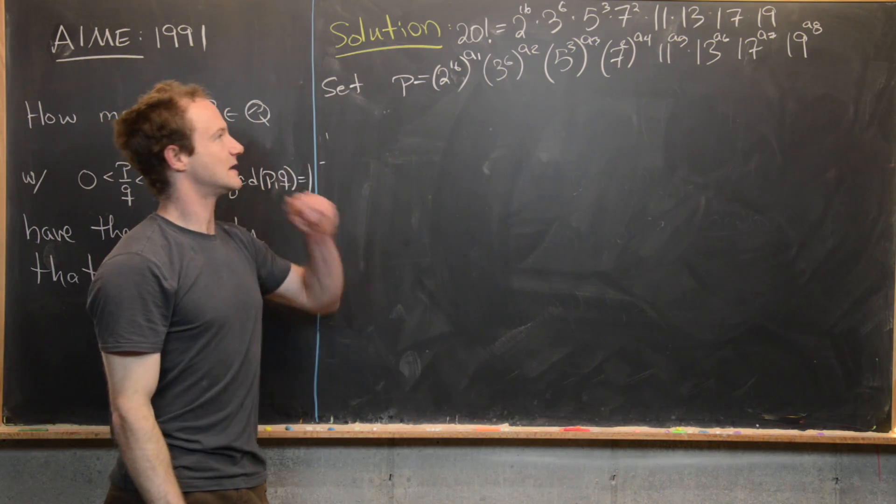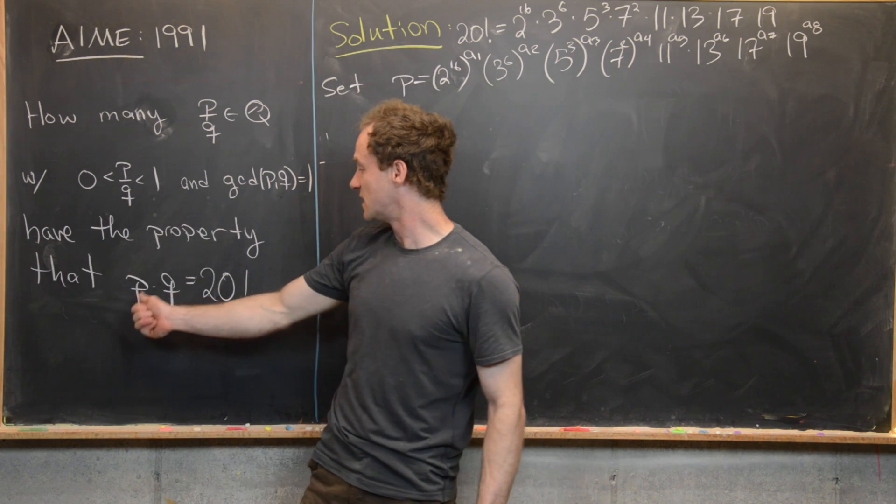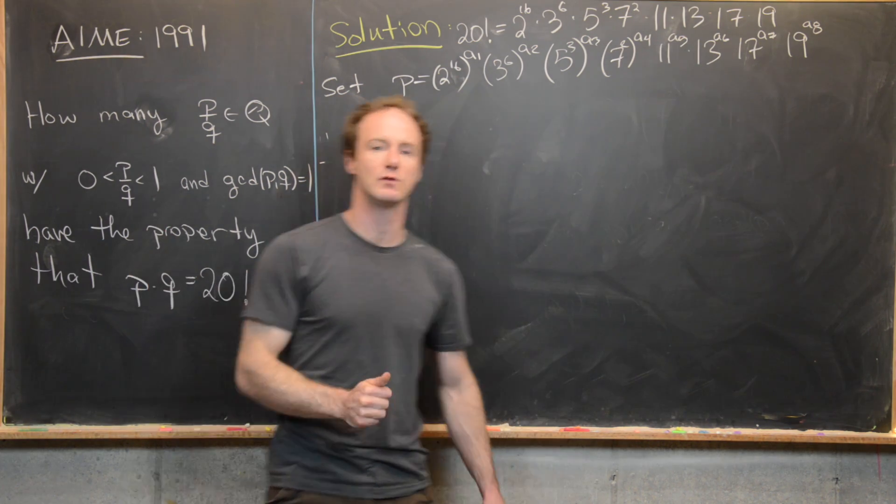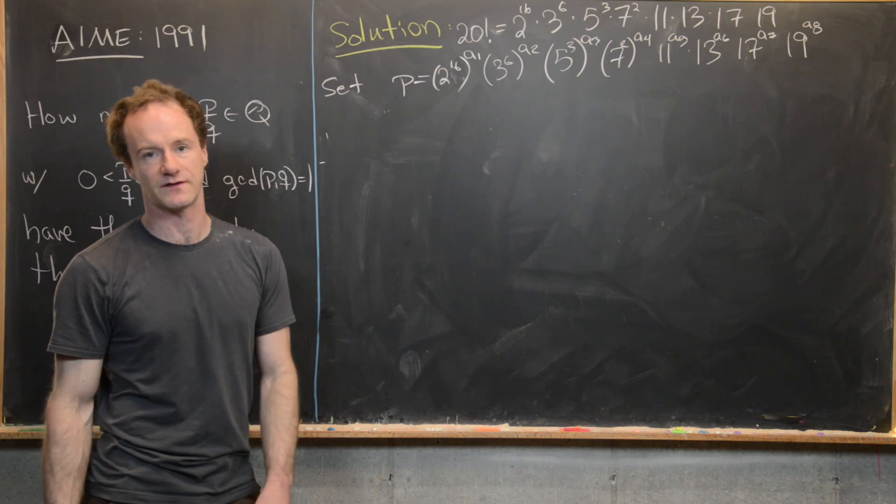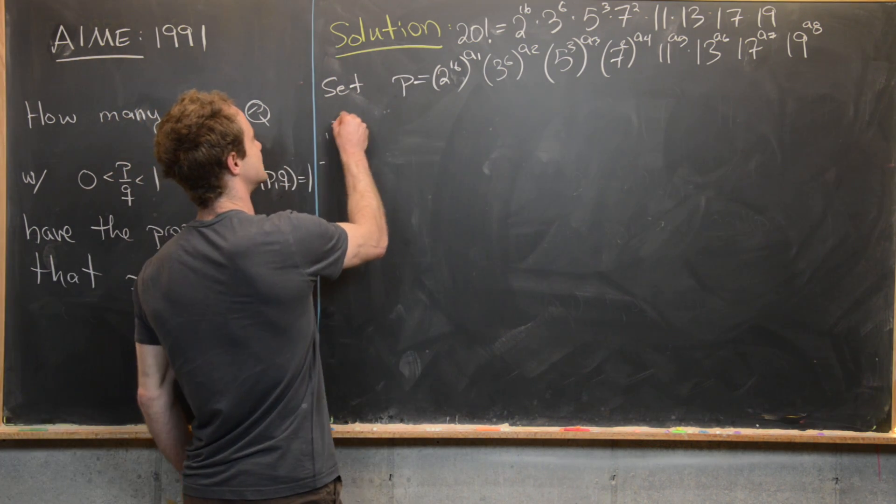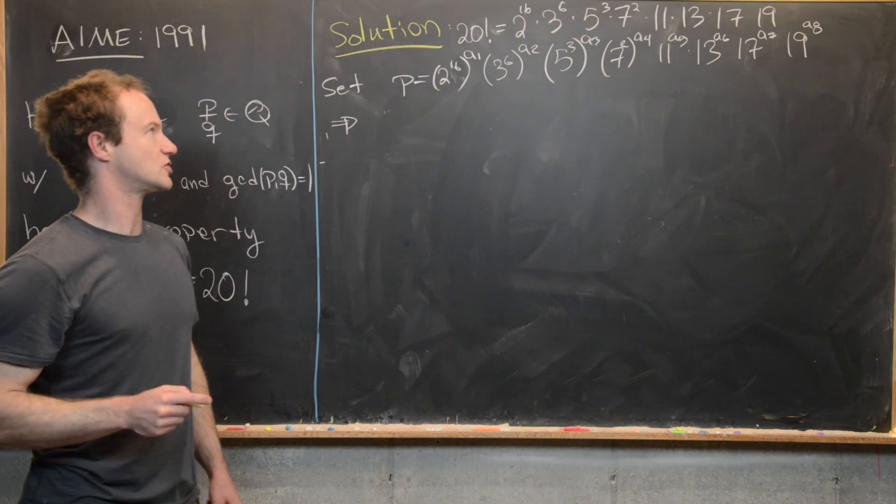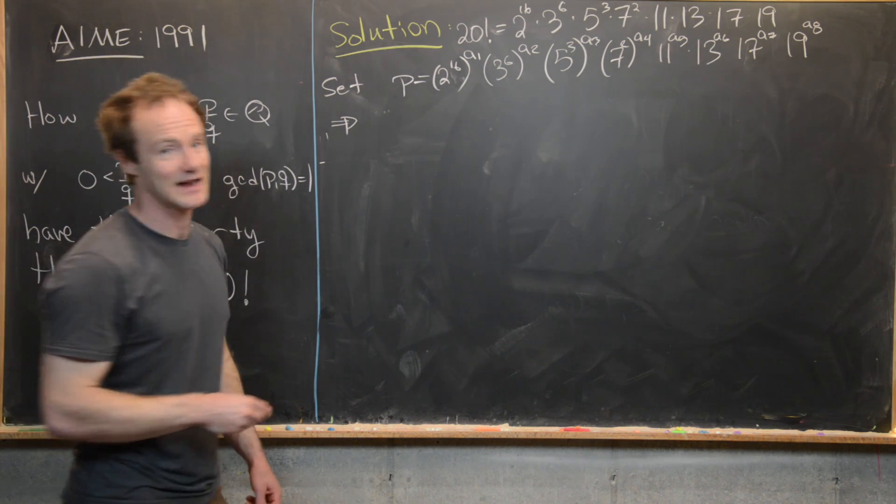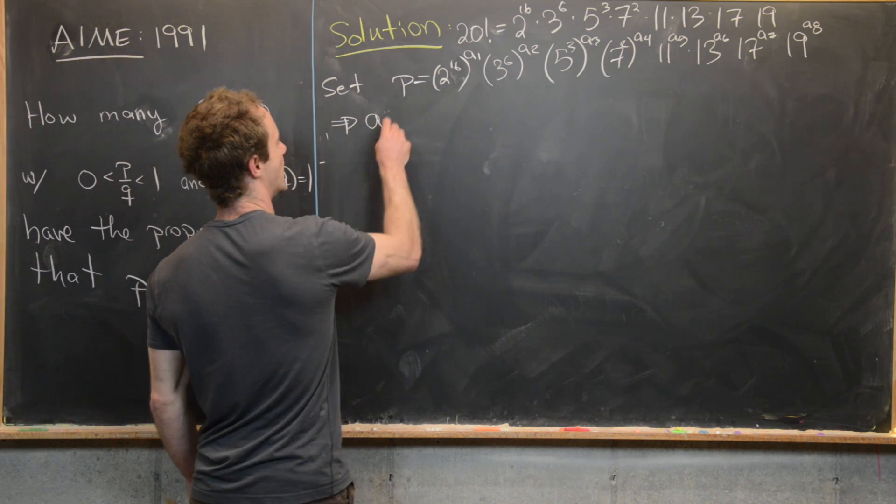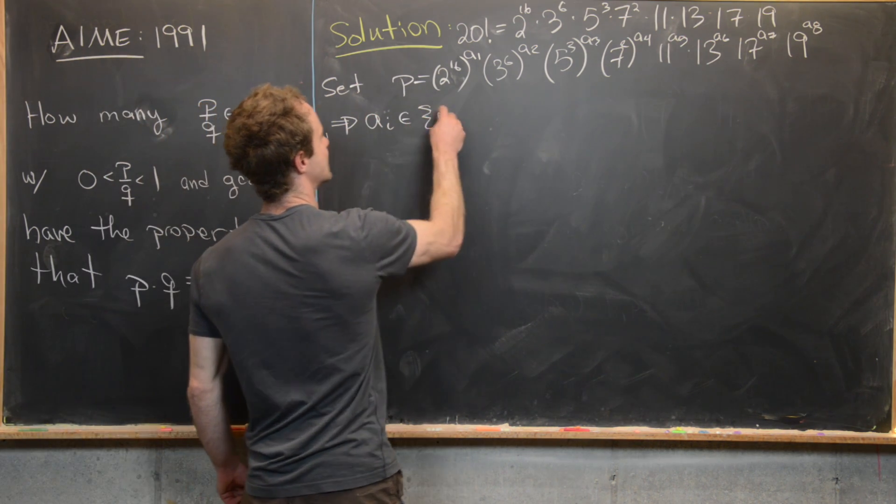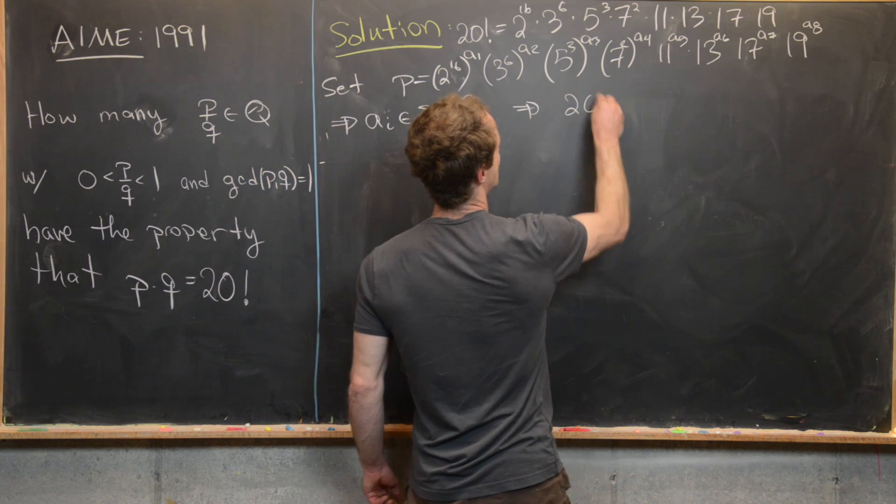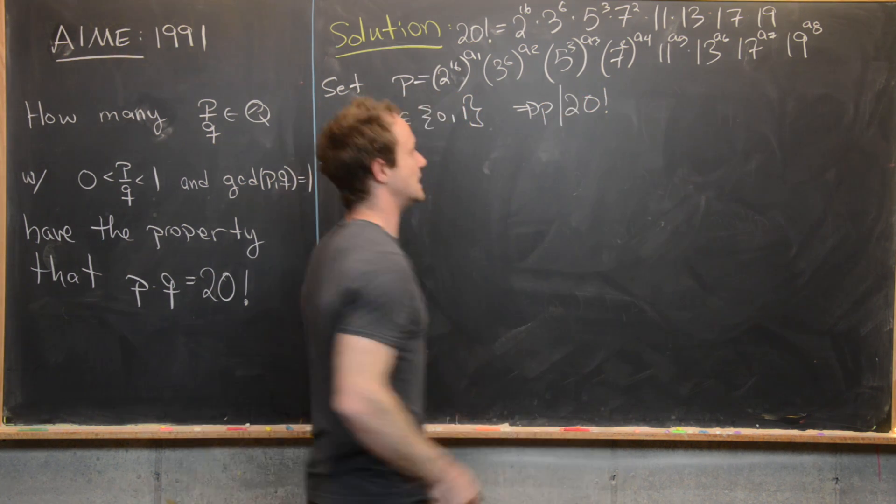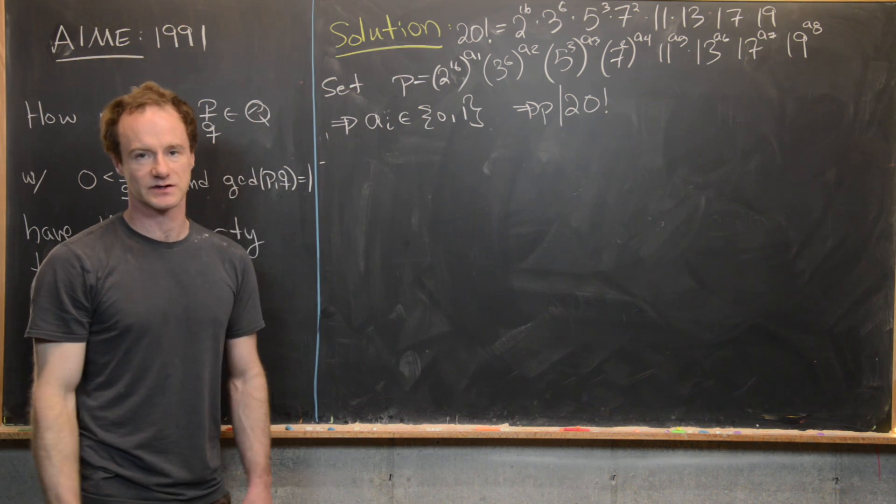But given that we're trying to get this factorization so that P times Q equals 20 factorial, we need this P to be divisible by 20 factorial. So the only logical choices for our AI numbers are 0 or 1. Here we'll take AI to be 0 or 1. And that will imply that 20 factorial is divisible by P. In other words, P divides 20 factorial.